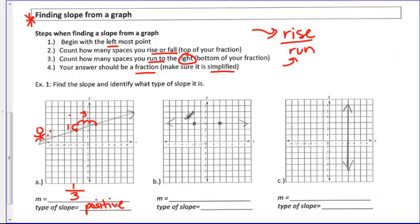Example 1B. Go with your leftmost point. Step two, count how many spaces you rise or fall. I don't go up or down at all. So I'm going to put a zero there. Then count how many spaces you run to the right. One, two, three, four spaces. So I have zero, four over four. If I plug this in my calculator, I get a nice zero. So I know it's a zero slope. Think of that bowling ball going down the alley. Zero slope.